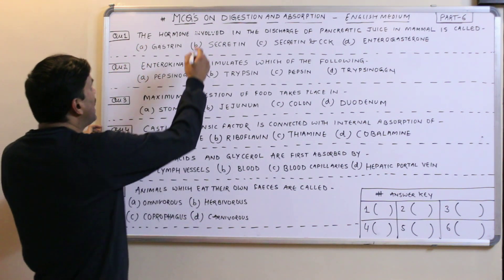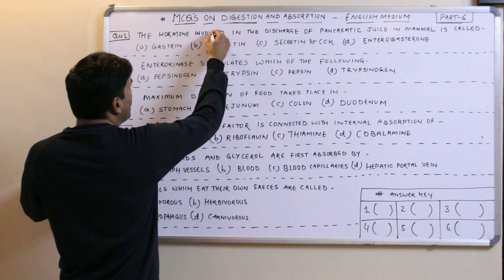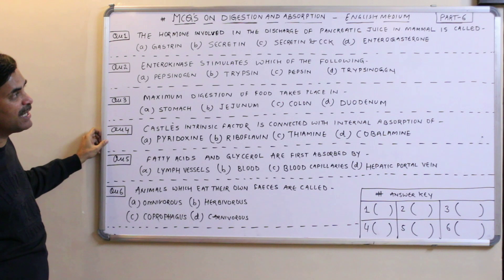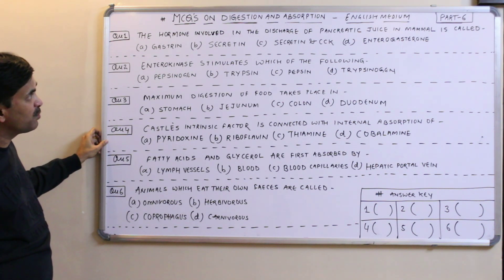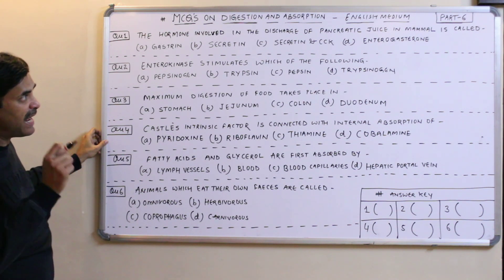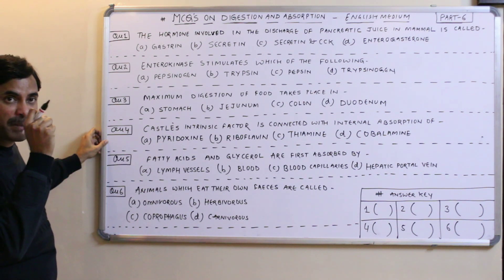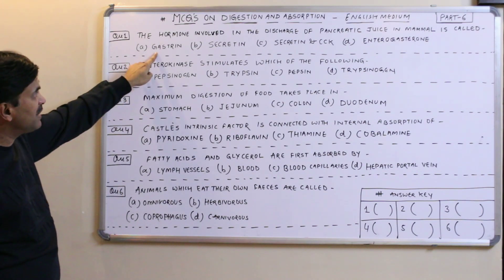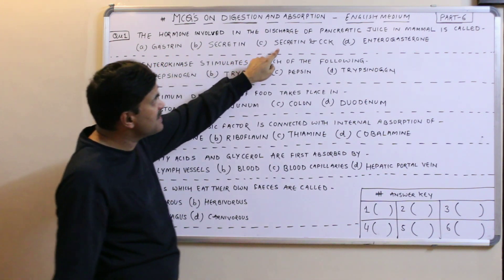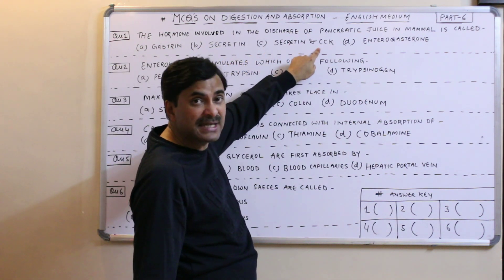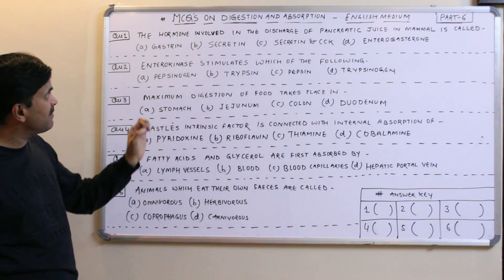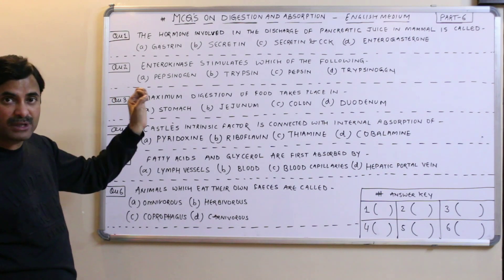The very first question: the hormone which is involved in the discharge of pancreatic juice in mammals is called — the question asks which hormone acts on the pancreas so that pancreatic juice is released. The options are gastrin, secretin, CCK (also called cholecystokinin), and anti-gasterone.